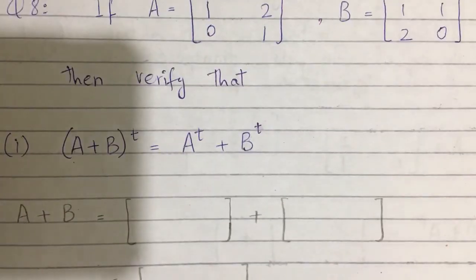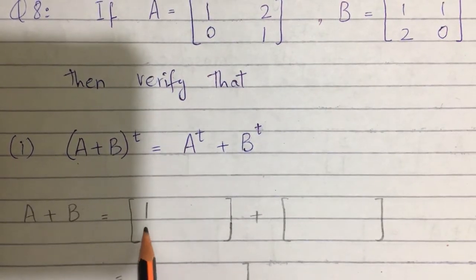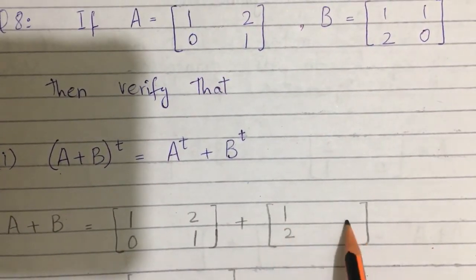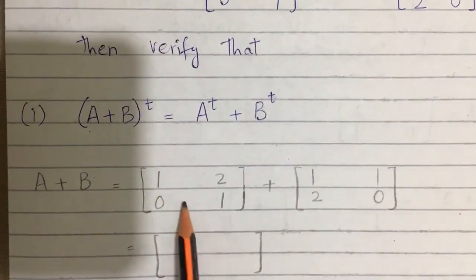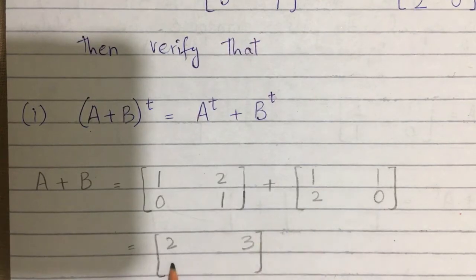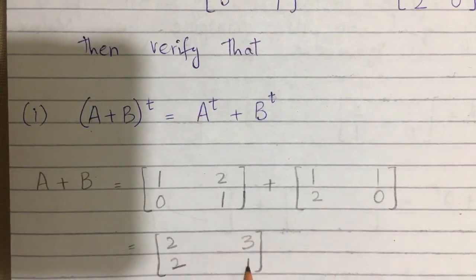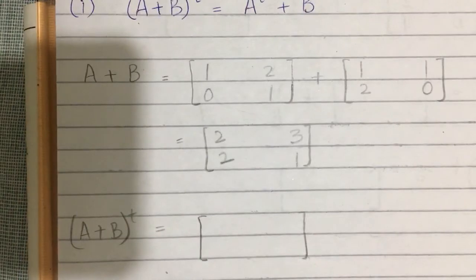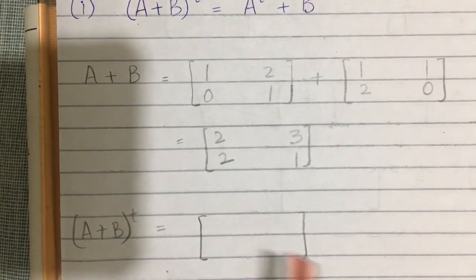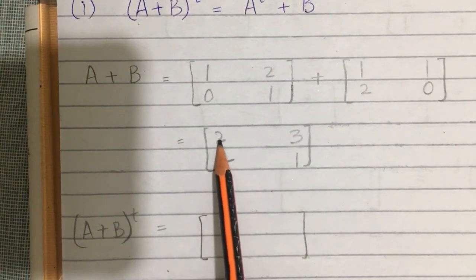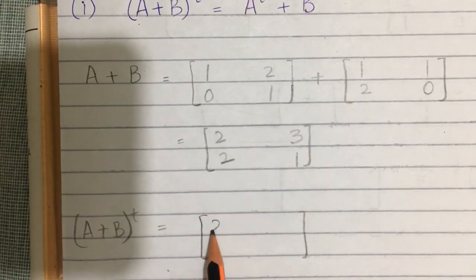Now we are going to add A plus B. So A is [1, 0; 2, 1] and B is [1, 2; 1, 0]. So A+B equals [1+1, 2; 2+1, 3; 0+2, 2; 1+0, 1], giving us [2, 3; 2, 1]. Now for (A+B) whole transpose, we change rows into columns: [2, 3; 2, 1].